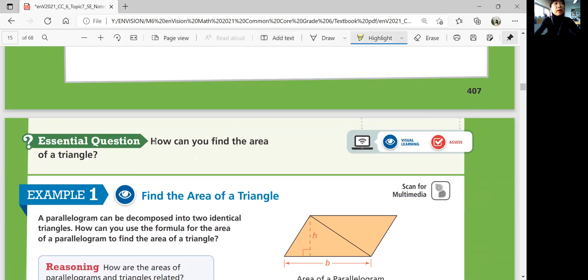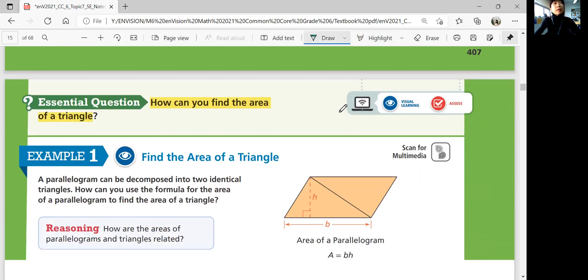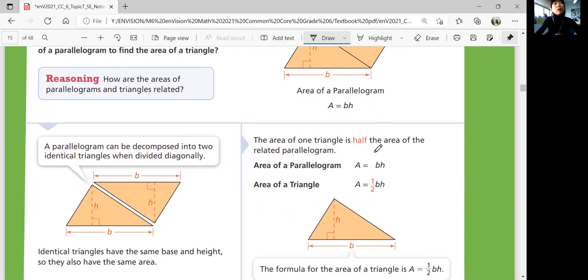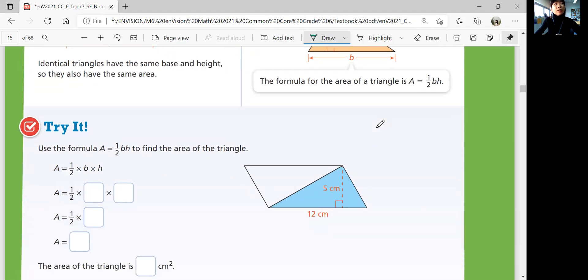So essential question. How can you find an area of a triangle? Is a question that we're going to answer throughout this lesson. Example one. Find the area of this triangle. A parallelogram can be decomposed into two identical triangles. So it can be separated into two equal triangles. How can you use the formula for the area of a parallelogram to find the area of a triangle? So the area of the parallelogram is base times height. And so if the triangles are equal and the parallelogram is divided equally into two equal parts, then you just have to divide this by half. So area of the triangle is one half times base times height.